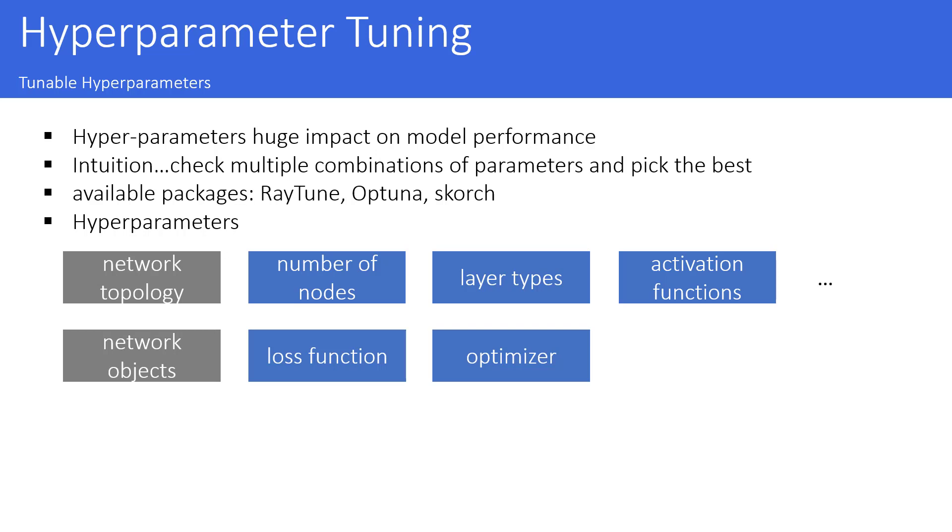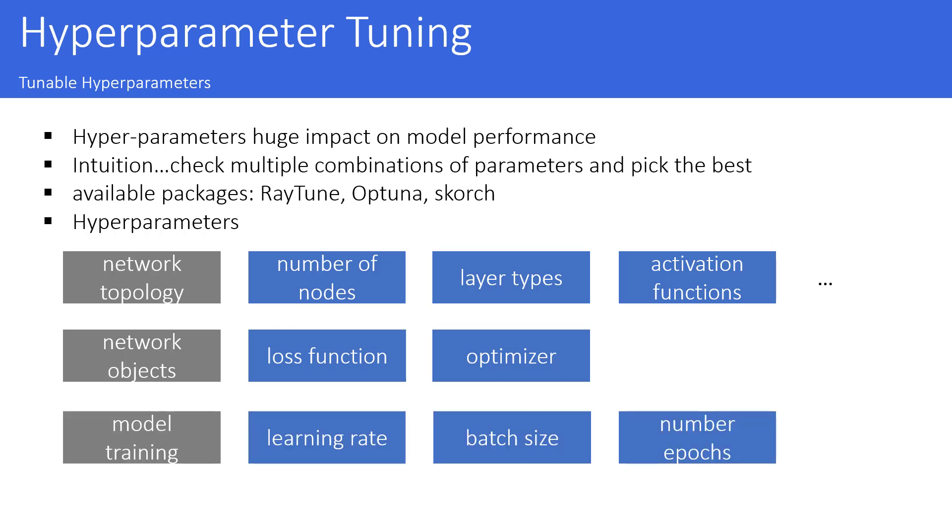Then there are some other network objects like the loss function or the optimizer which you could change or which have some parameters themselves that could be optimized. And then during the model training there are also some other parameters like the learning rate, the batch size we spoke about earlier or the number of epochs. All of these could be modified and much more.